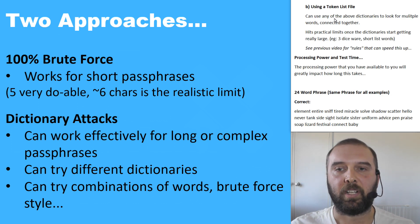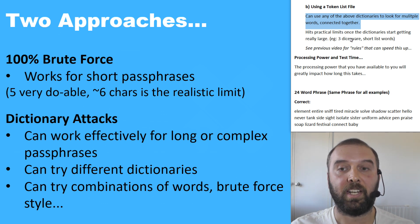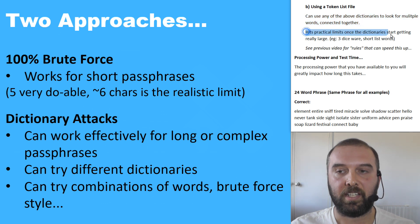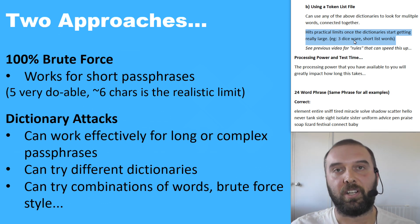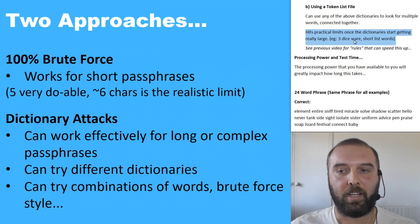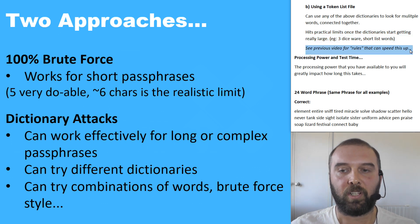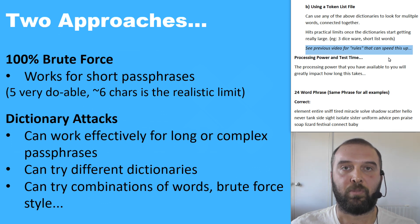The other approach is using dictionaries in a brute-force way — looking for multiple words connected together. This does hit practical limits once dictionaries get quite large. For example, you can recover something like three diceware words from a short word list, but beyond that things start getting very time-consuming. Rules around token files, as shown in the previous video, can speed things up dramatically.